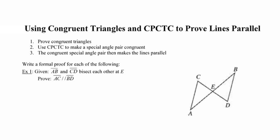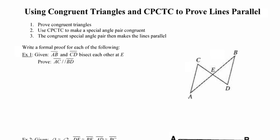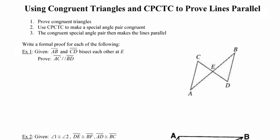In this video, we'll explore how we can use congruent triangles to prove that lines are parallel to one another. The three steps we're going to follow are: first, prove triangles congruent; second, use corresponding parts of those congruent triangles to establish that a special angle pair is congruent; and then lastly, use that special angle pair to force the lines to be parallel. We'll write a formal proof for each of the following examples using each one of those steps.